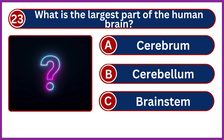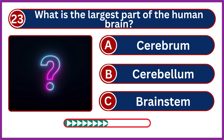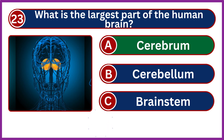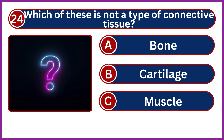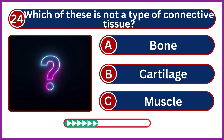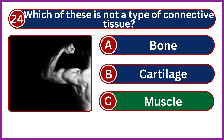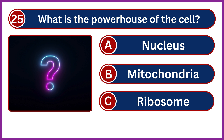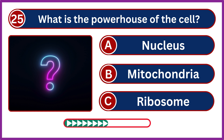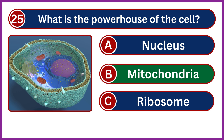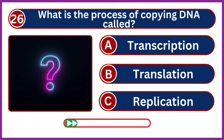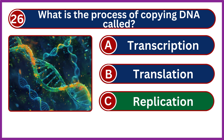What is the largest part of the human brain? Cerebrum. Which of these is not a type of connective tissue? Muscle. What is the powerhouse of the cell? Mitochondria. What is the process of copying DNA called? Replication.